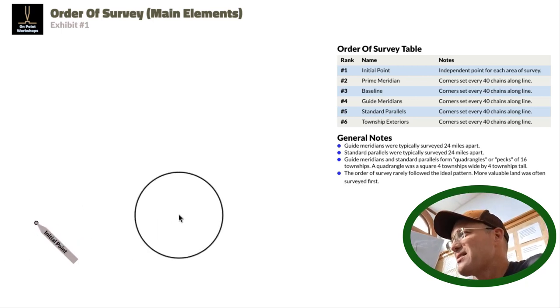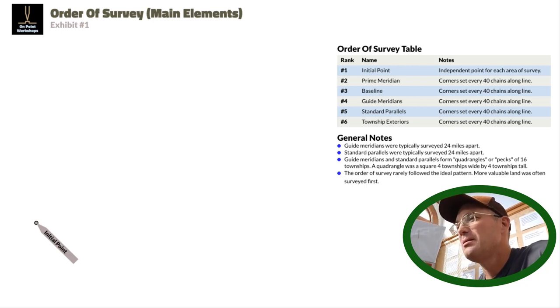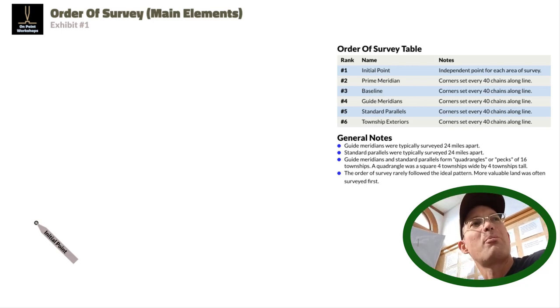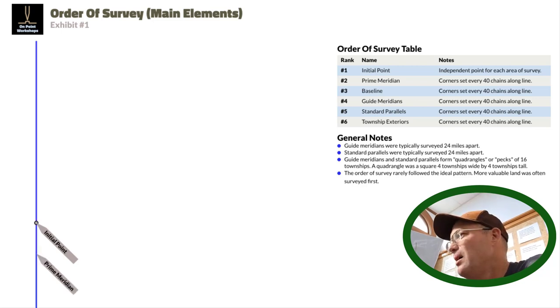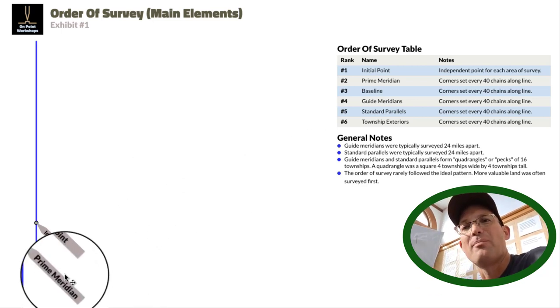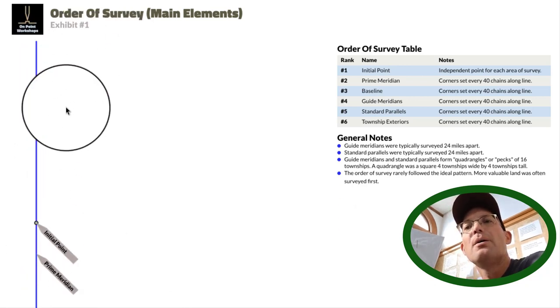The next thing they do is run a line north-south from the initial point and set a monument every 40 chains or half mile. That line is called the Prime Meridian. You can see it here in blue. Now, let me just stop before I go any further. I'm giving you the general order that the elements were laid out in. Like all complicated systems, there are deviations from this general order.